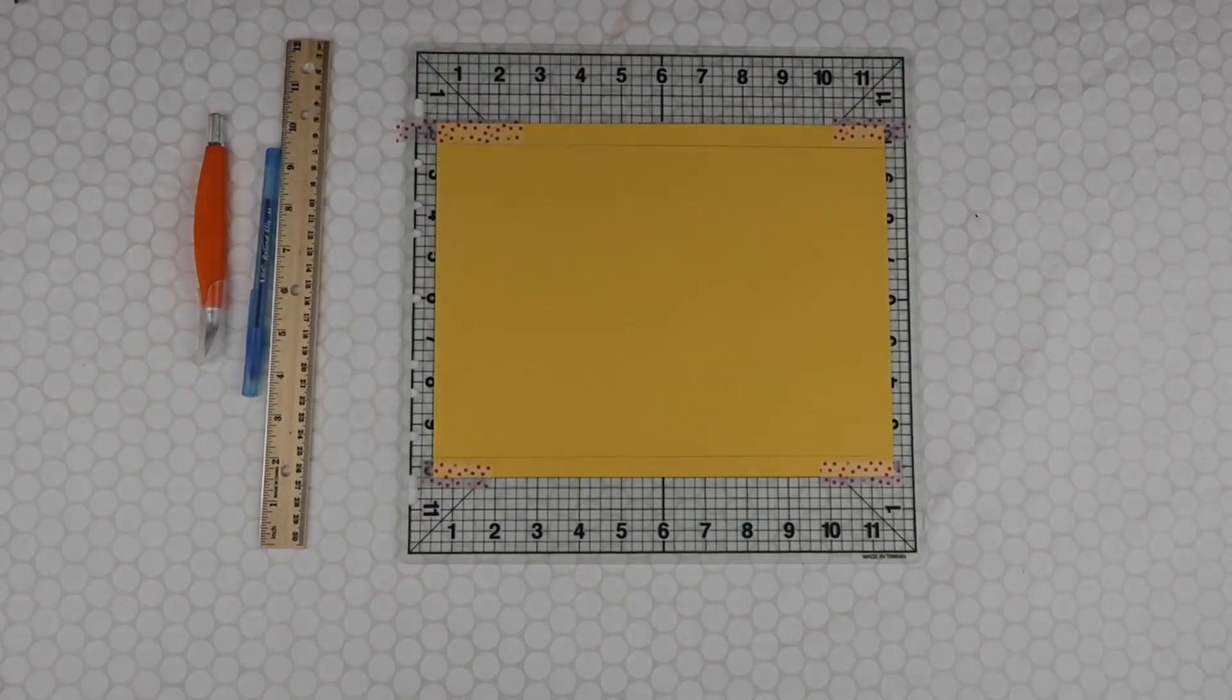That just holds the piece of paper down so it doesn't move while I'm cutting, even if the mat moves or something shifts. So essentially with this mat - I'm not sure what the different brands have - but these are quarter inch marks.